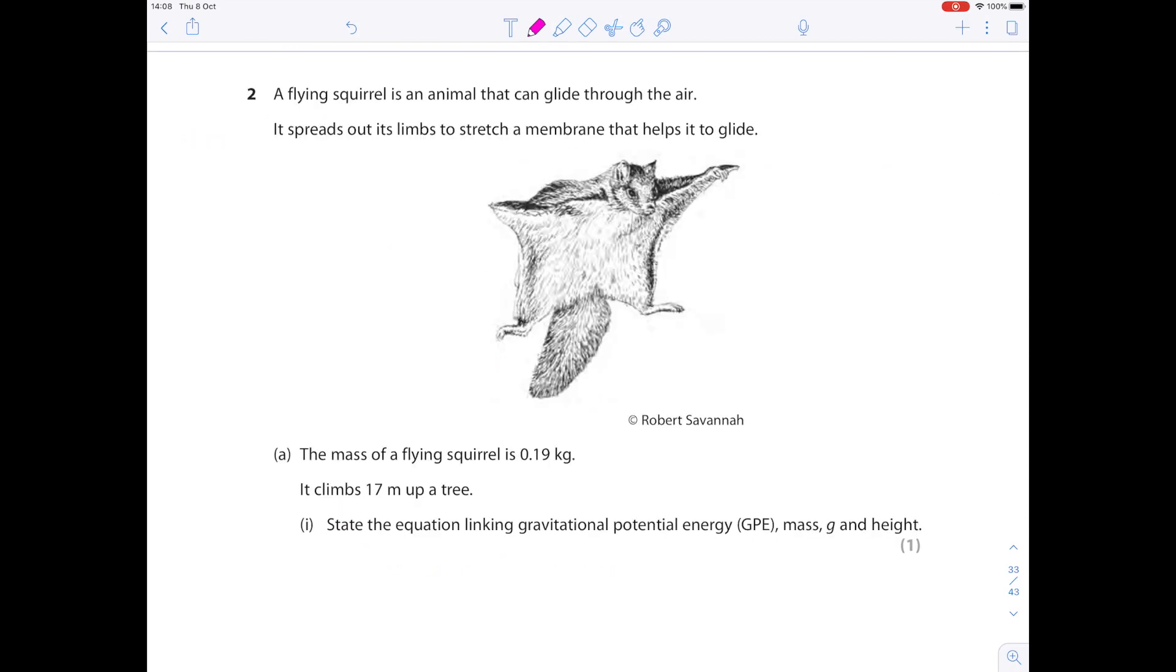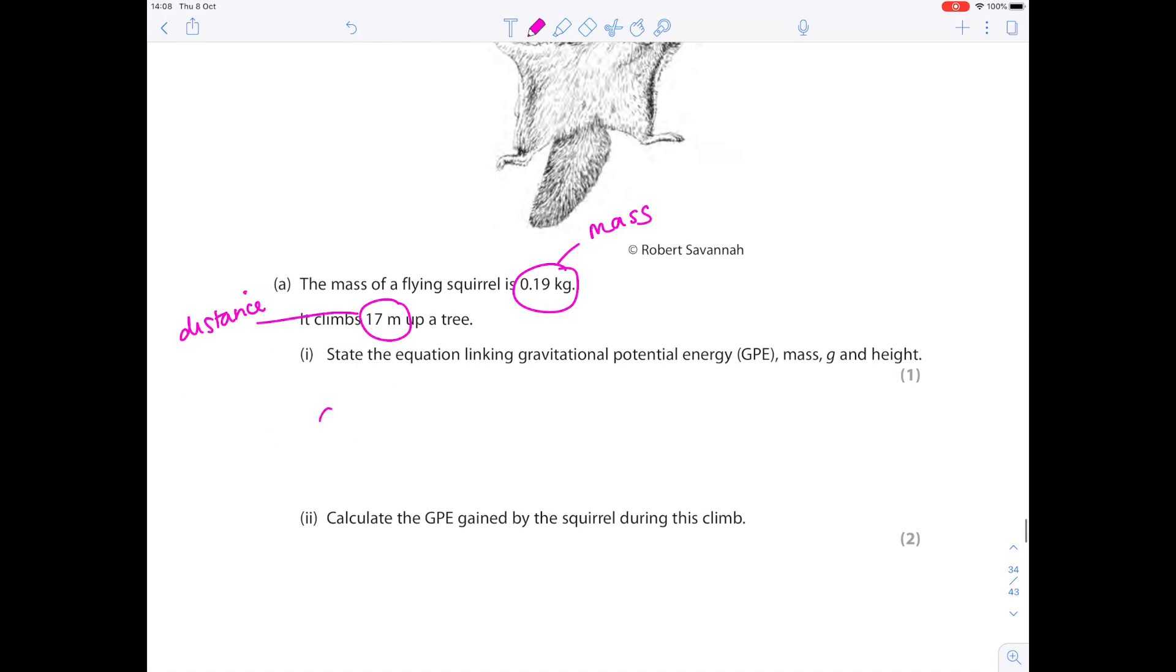A flying squirrel is an animal that can glide through the air. It spreads out its limbs to stretch a membrane that helps it to glide. The mass of the flying squirrel is 0.19 kilograms. It climbs 17 meters up a tree. State the equation linking gravitational potential energy, mass, g and height. It's not really a formula triangle here. It's much better to just learn this off by heart. You simply multiply together all those values.